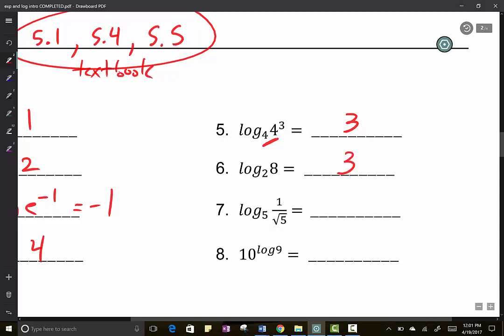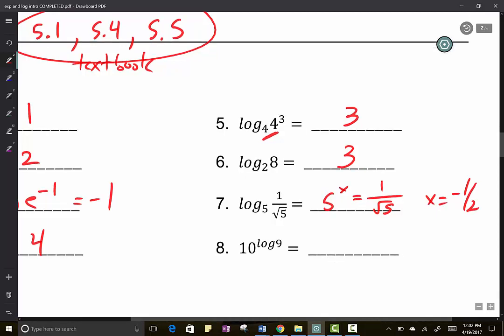Three. This is not three. Close. Log. Yeah, this is tricky. How do we get from five? So five to the what power equals one over the root of five. It's got to be negative and it's got to be one half. It's got to be a square root and a negative.